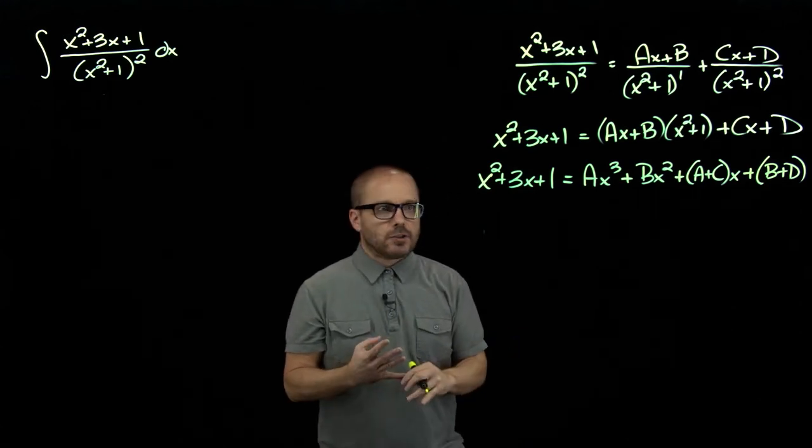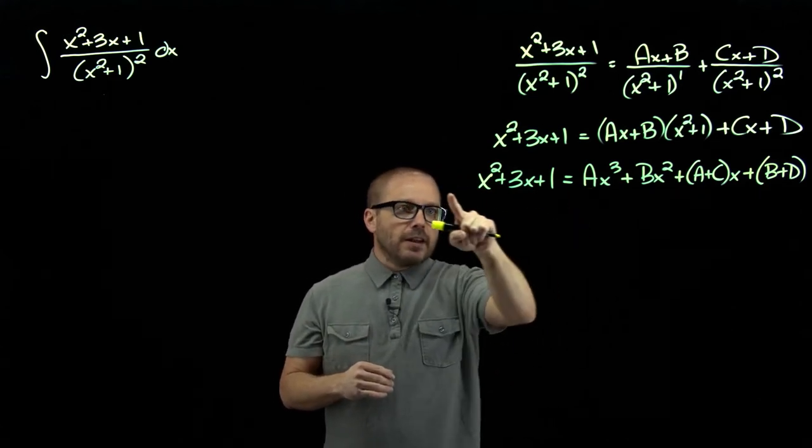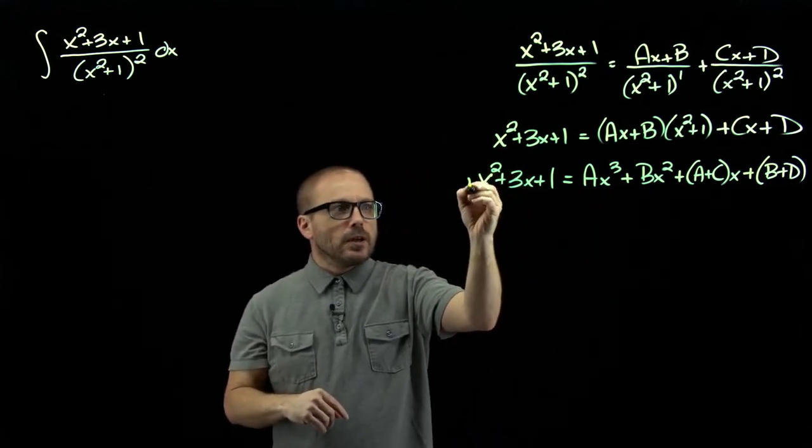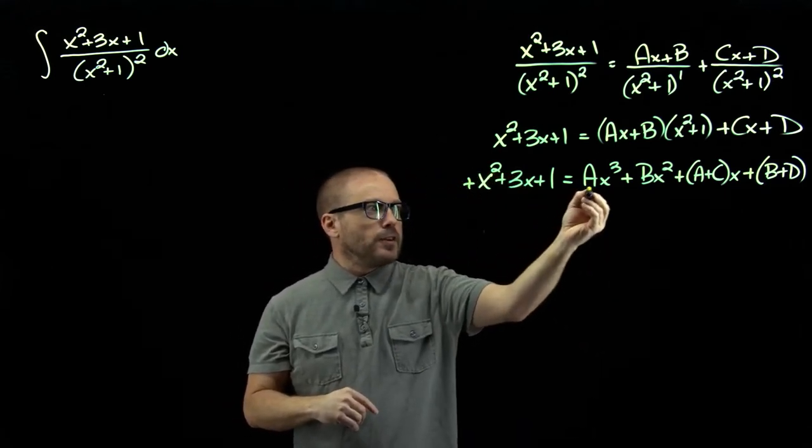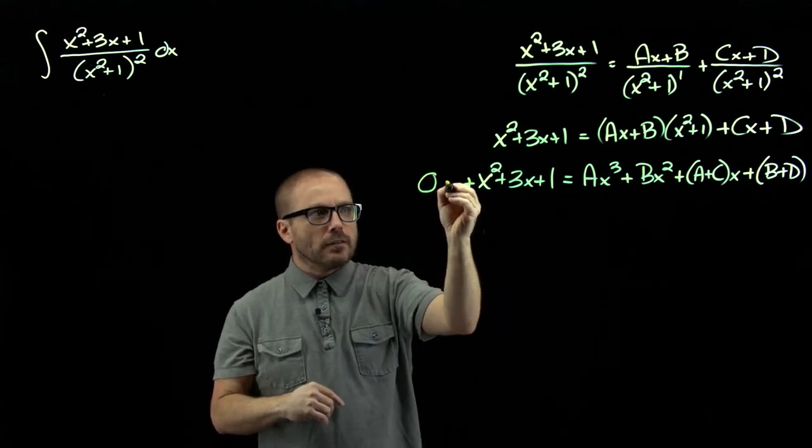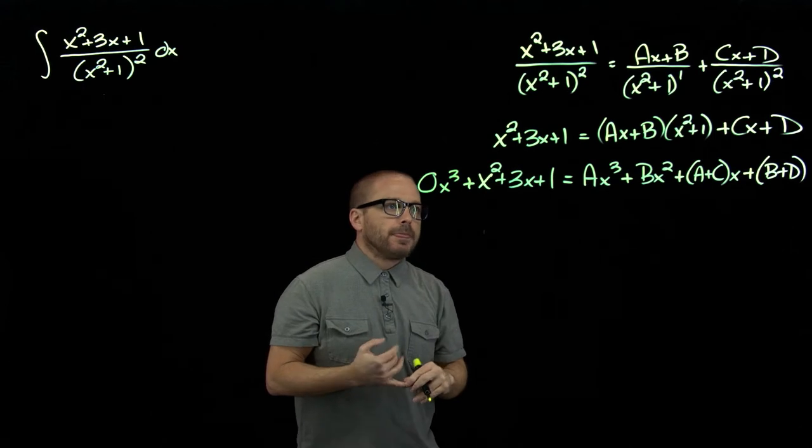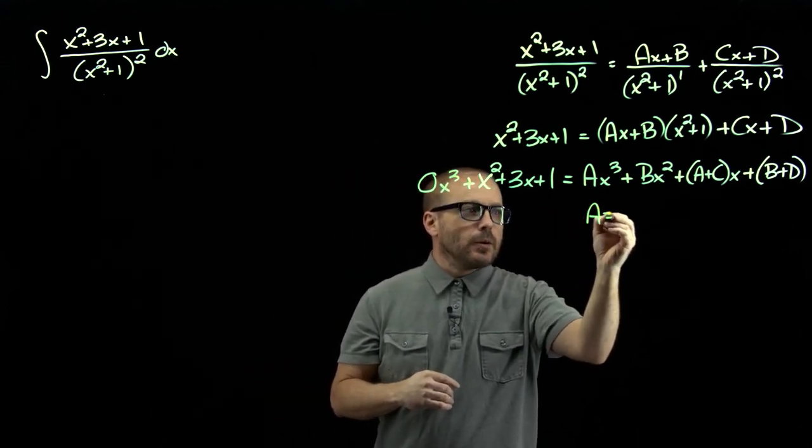Now we're ready to match up. Notice we don't even have a cubic over here on the left, but we have one over here. That's okay. It just means that that coefficient needs to be zero, because you can think of us having a zero x cubed term there. So, matching coefficients, a should be zero.